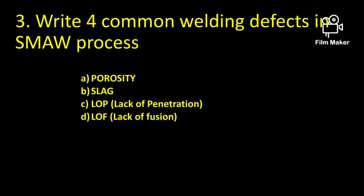Write four common welding defects in the SMAW process. They are Porosity, Slag, Lack of Penetration, and Lack of Fusion. These are the four common defects in the SMAW process.